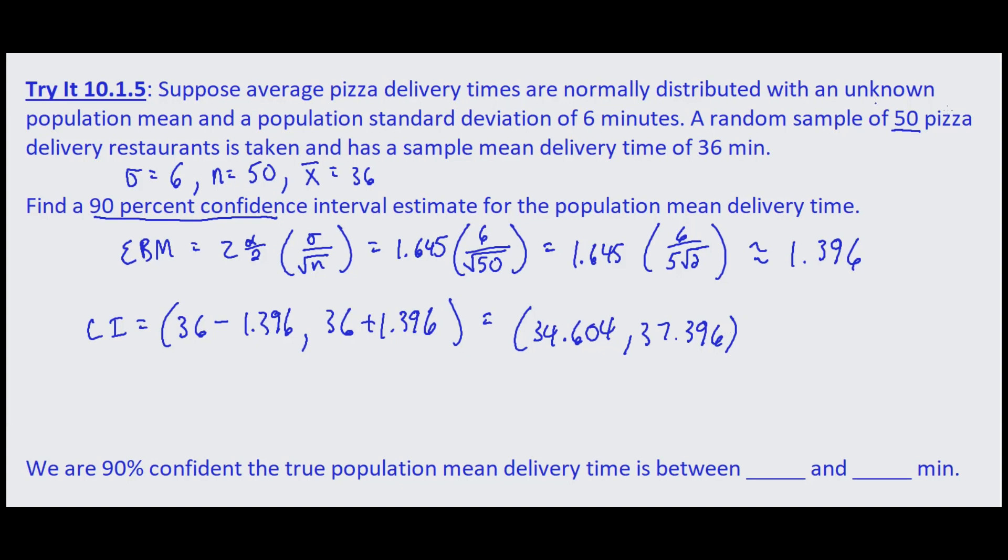So we can say that we are 90 percent confident that the true population mean delivery time is between 34.6, we'll round to the nearest tenth, and 37.4 minutes.